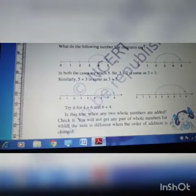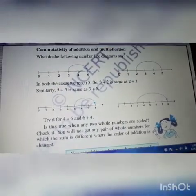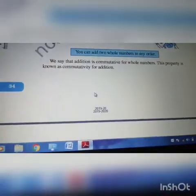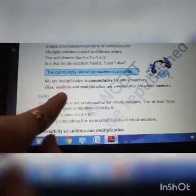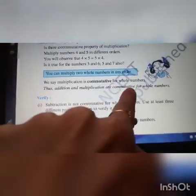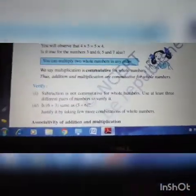Next, commutative property. It is satisfied for addition and multiplication. That is what given right. A plus B equal to B plus A. Or A into B equal to B into A. So commutative addition and multiplication are commutative for whole numbers.